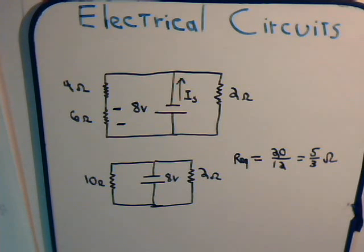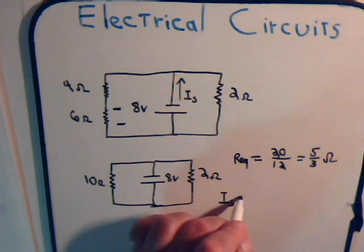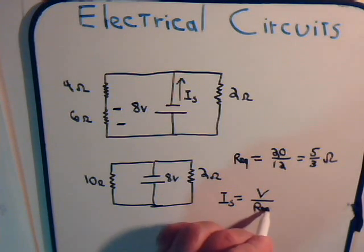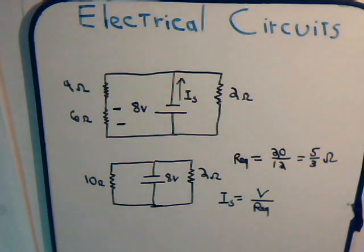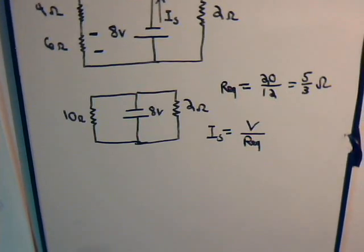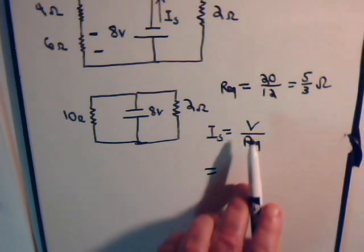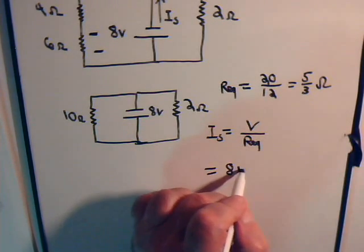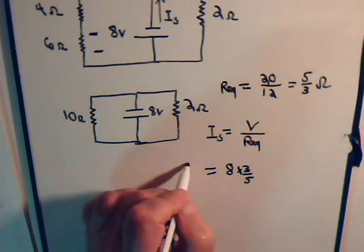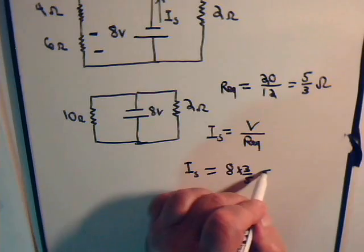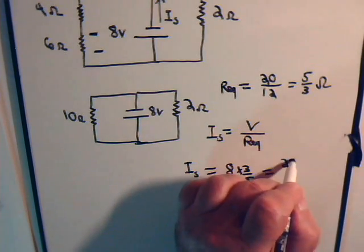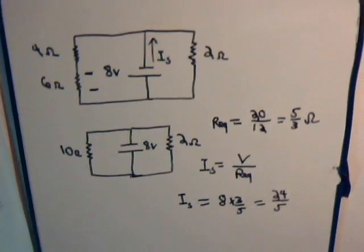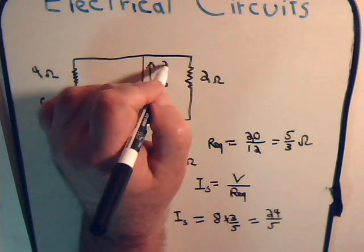The source current that comes out of the battery now is equal to the voltage of the battery divided by the equivalent resistance. So that would be equal to 8 divided by 5 thirds, or times 3 over 5. So the source current is 24 over 5 amps.